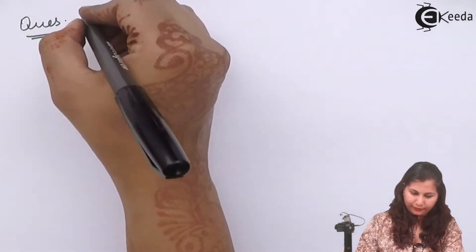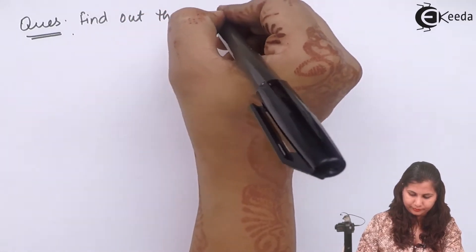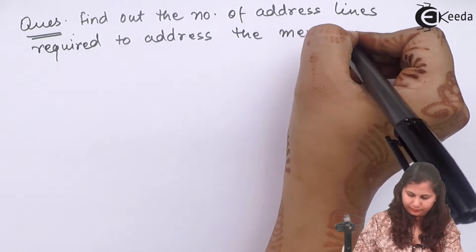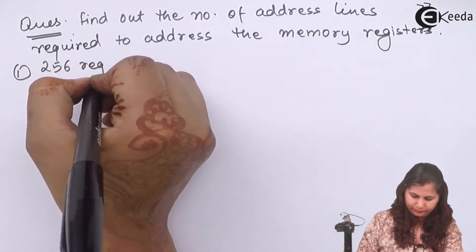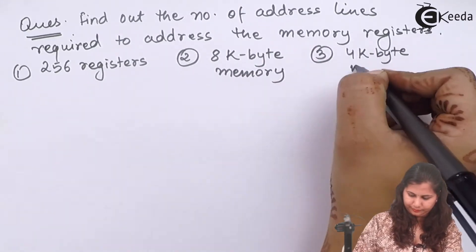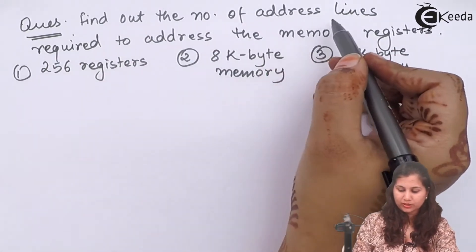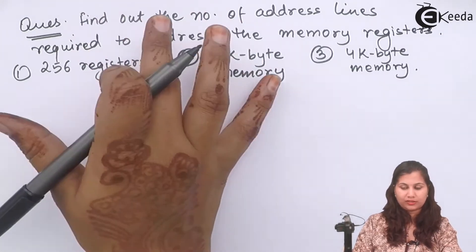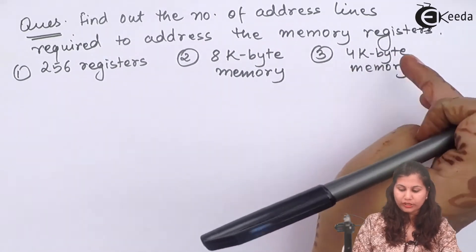Hello friends. In this video we will solve a problem on how to calculate the memory address lines of a chip — that is, how to find out the memory address range of a chip. We need to find out the number of addresses and the number of address lines required to address the memory. The memory sizes given are: 256 registers, 8 kilobyte memory, and 4 kilobyte memory.